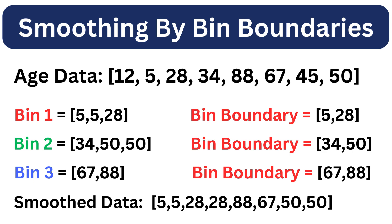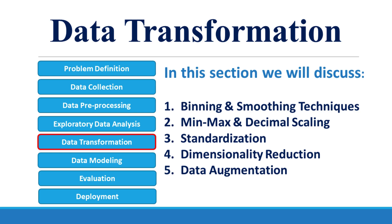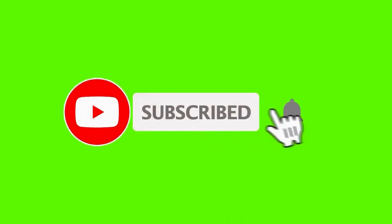To sum up, binning helps us categorize continuous data while smoothing helps us reduce the noise in the data. Both techniques are critical when we want to simplify the data and make it more digestible for machine learning models. In the next video we will dive into normalization and standardization. If you found this video helpful, don't forget to like, share, and subscribe for more videos on data science and AI. See you next time.